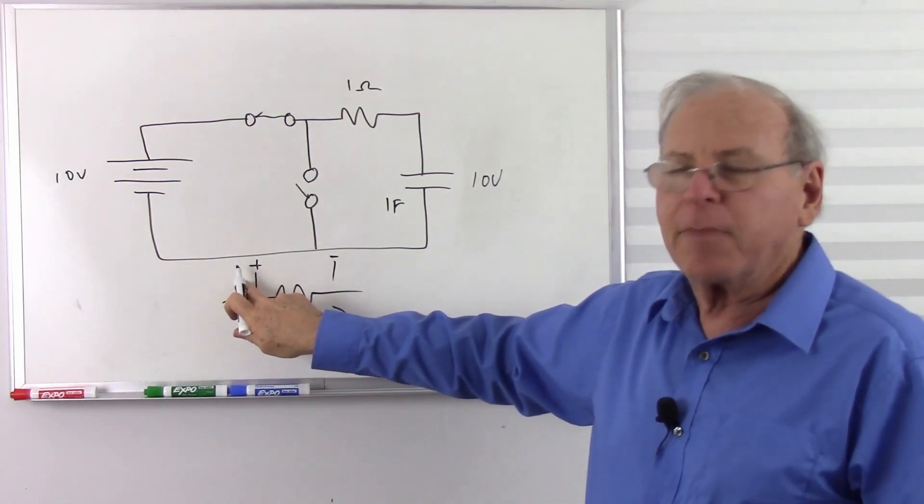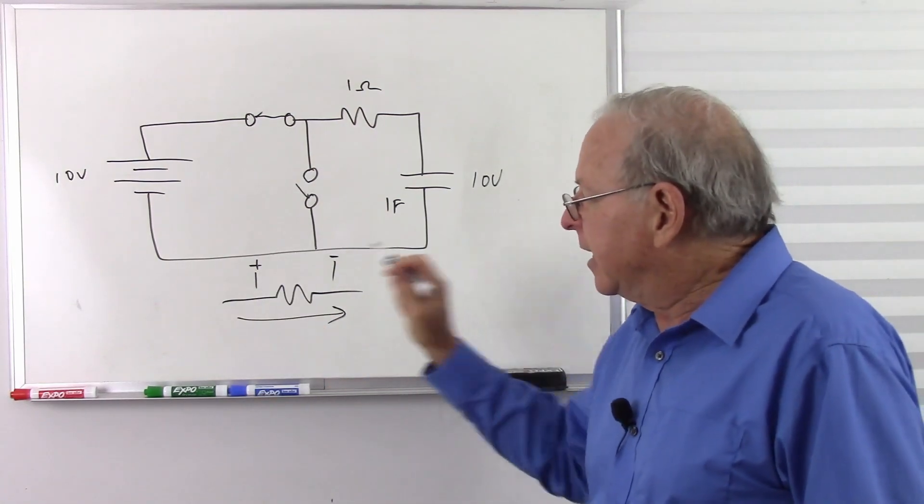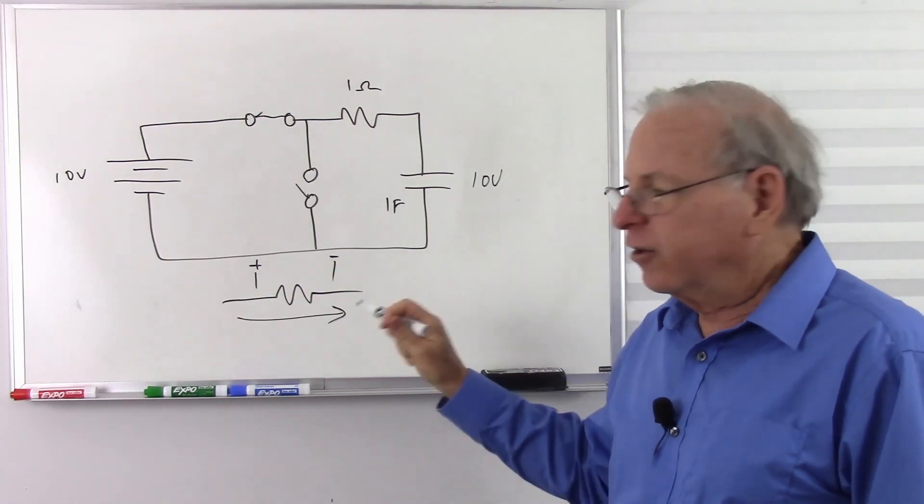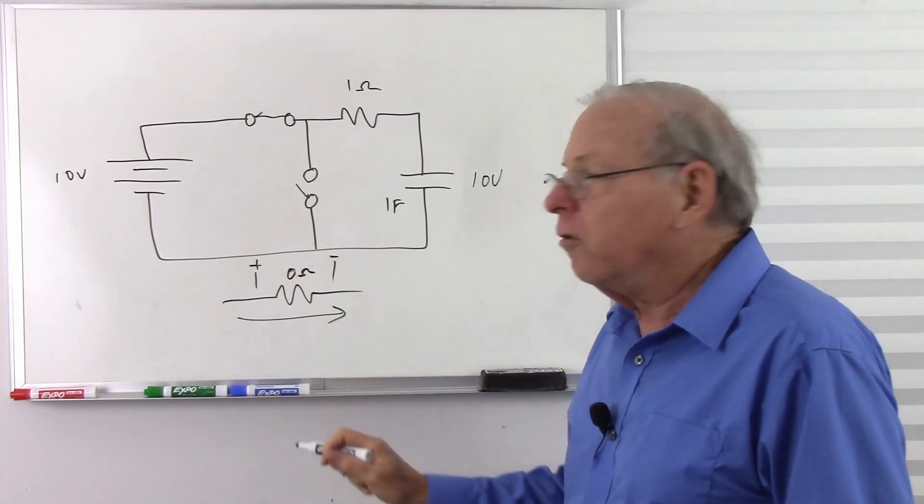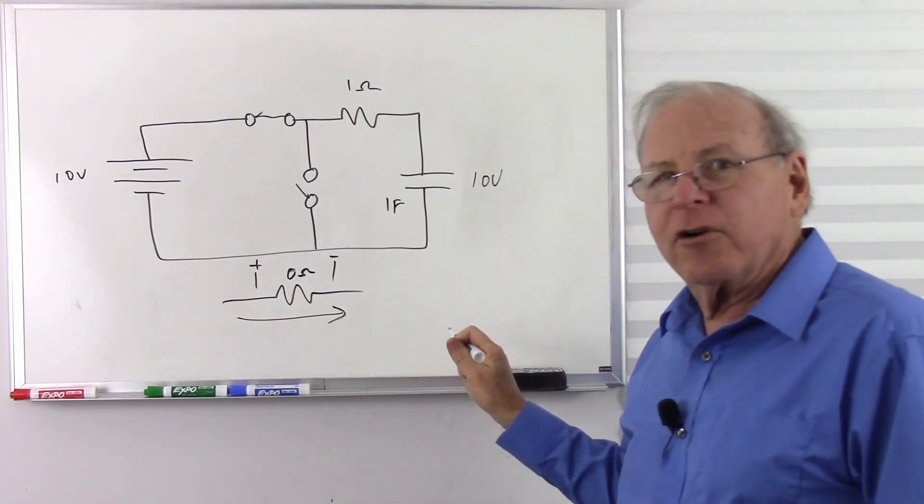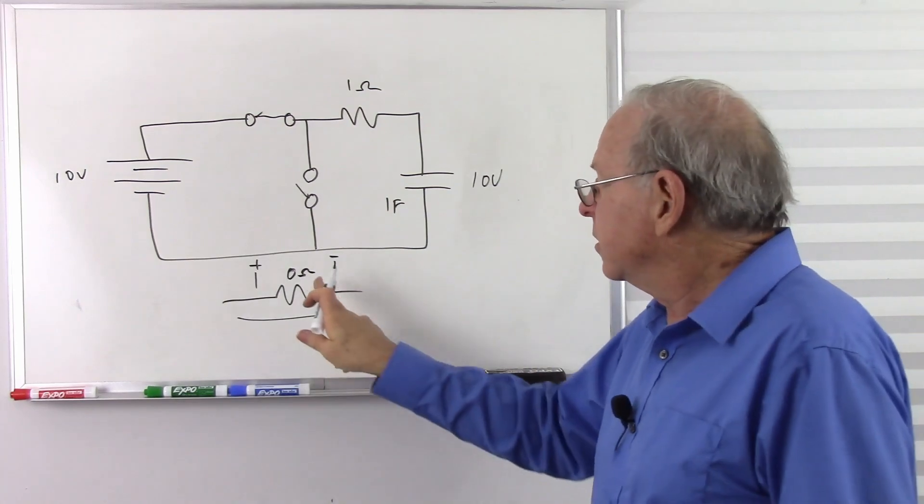Higher is represented by positive, lower is represented by negative, and so I'm going to have voltage across there. But to get that voltage, I must have current plus resistance. If I have no resistance, zero ohms, I can have all the current in the world, and I'm not going to get voltage.